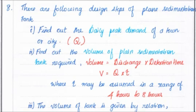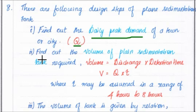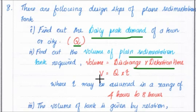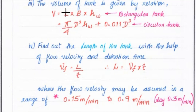The main steps followed in the primary sedimentation tank design are: first, find the daily peak demand Q for the city. Second, find the volume of the plain sedimentation tank required using V = Q × T, where T is assumed in the range of 4 to 8 hours. Third, the volume of the tank is given by the relation V = L × B × HW.